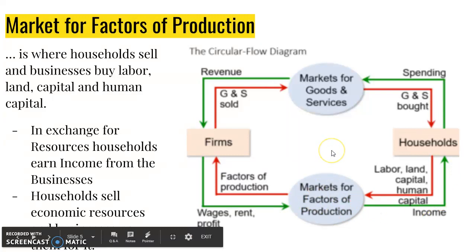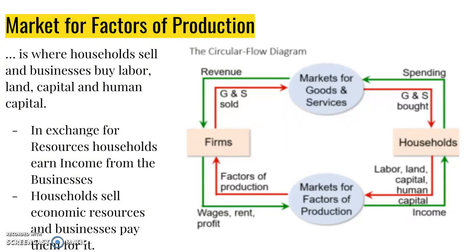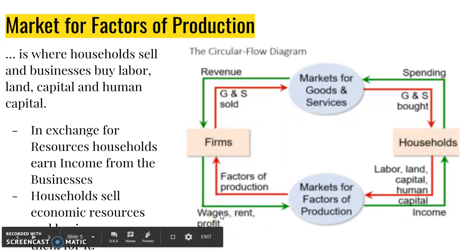In exchange for resources, households earn income from the businesses. Households sell economic resources and businesses pay them for it. Households receive wages for their labor, rent for their land, profit for their human capital, and interest — which is not listed here — for the use of their capital.